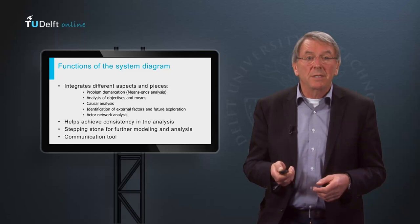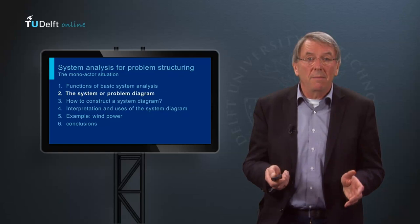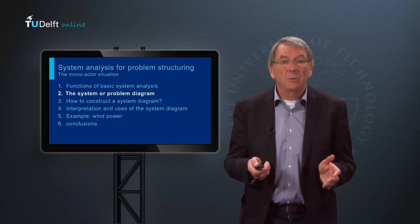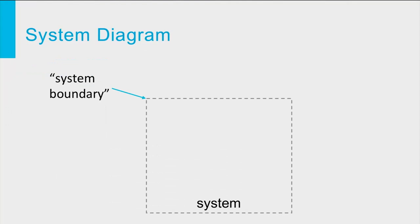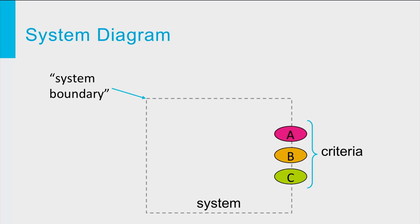Let me now briefly explain the basics of the system or problem diagram. A system diagram is a simple conceptual model that represents the key aspects of a problem situation. It specifies what part of reality is of interest to the problem owner — we call that part the system. The system boundary is generally displayed as a dashed rectangle or box. What is in the box is considered to be part of the system, and what is outside is part of the system's surroundings or system context. Your client is interested in specific outcomes of the system — we call those the outcomes of interest or criteria, and display them as factors on the right-hand side of the system.